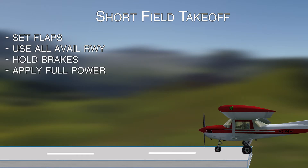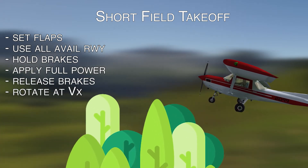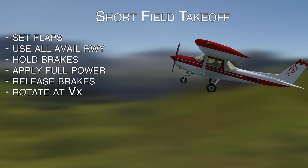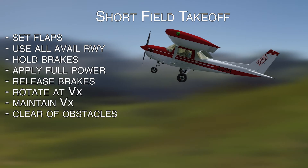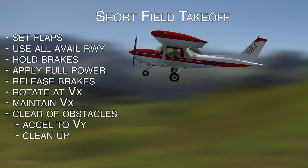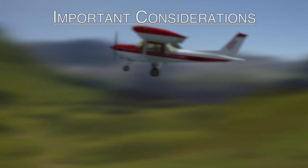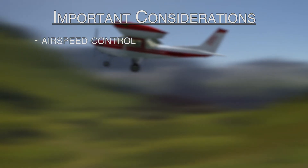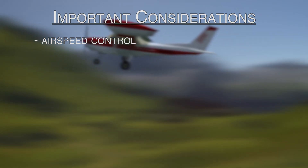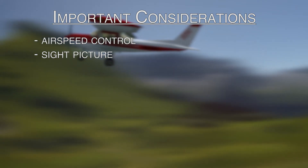We're going to hold our brakes and apply full power. As the engine gets up to speed, we're going to release the brakes and accelerate, rotating at VX. You want to make sure you rotate at the correct time so that you don't settle back down to the runway once you climb out of ground effect. Maintain VX until you're clear of obstacles, which is usually 50 to 100 feet, then pitch down and transition to VY and clean up the airplane by retracting the gear if it's retractable and retracting flaps one at a time. Airspeed control needs to be precise — you don't want to stall by going too slow, and you don't want to rotate too early and settle back down. From a sight picture perspective, the nose is way up there, so it looks like you're pretty much stalling, but you're actually doing fine.